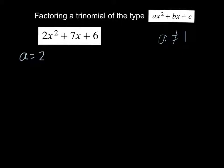First we identify a, b, and c. A is 2 here, the coefficient of x². B is the coefficient of the linear term or the x, which is 7. And c is the constant. Then we find the product a times c, so 2 times 6, that's 12.